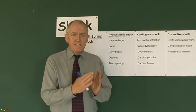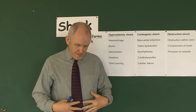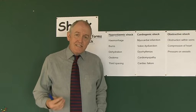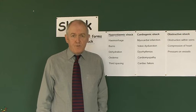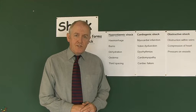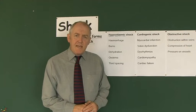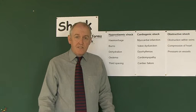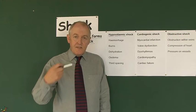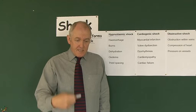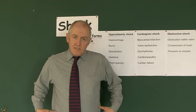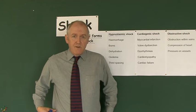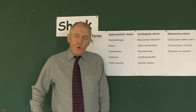Hemorrhage can also be internal. It's possible to bleed into body cavities — there are potential spaces in the body such as the peritoneal cavity or the pleural cavity. Blood can also be lost through long bone fractures. There's a saying: 'on the floor and four more' — blood can go onto the floor, or into four more places: the thoracic cavity, the abdominal cavity, the pelvic cavity, and the limbs.